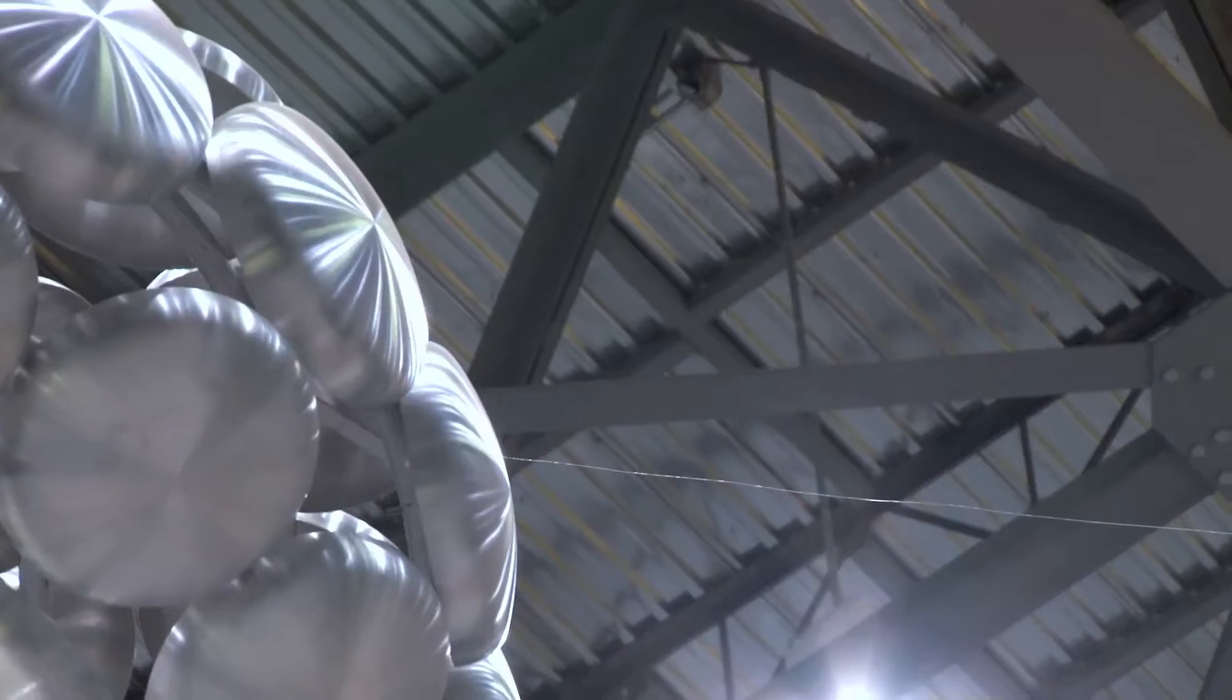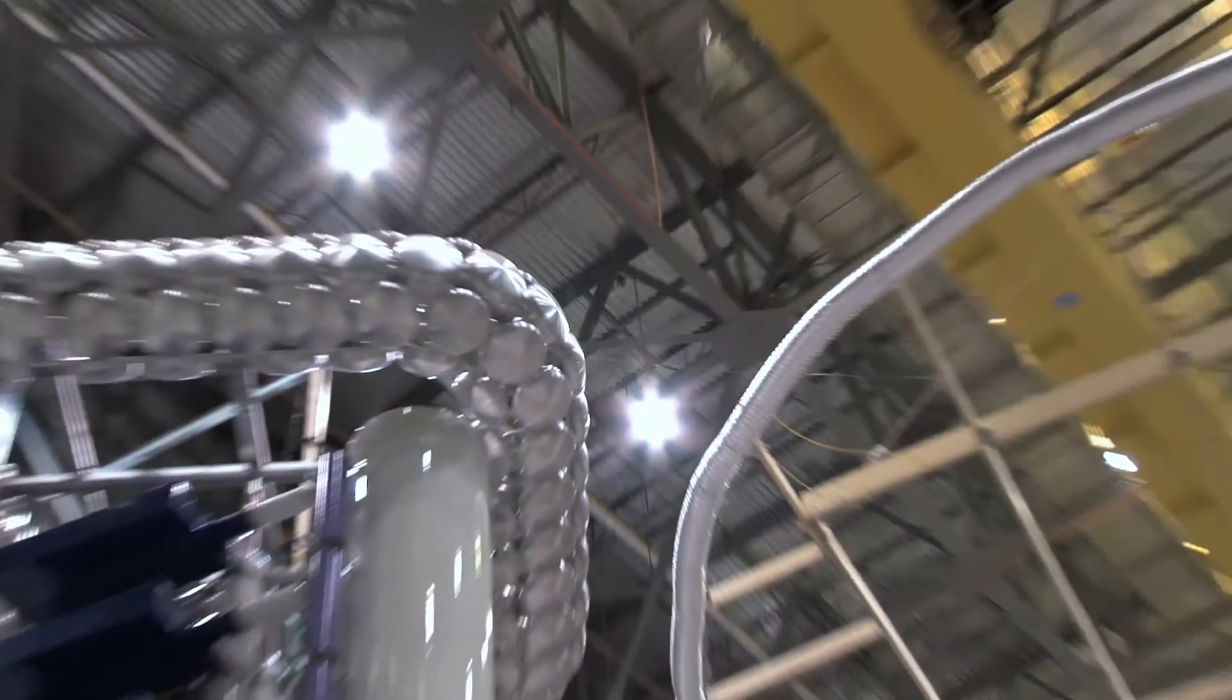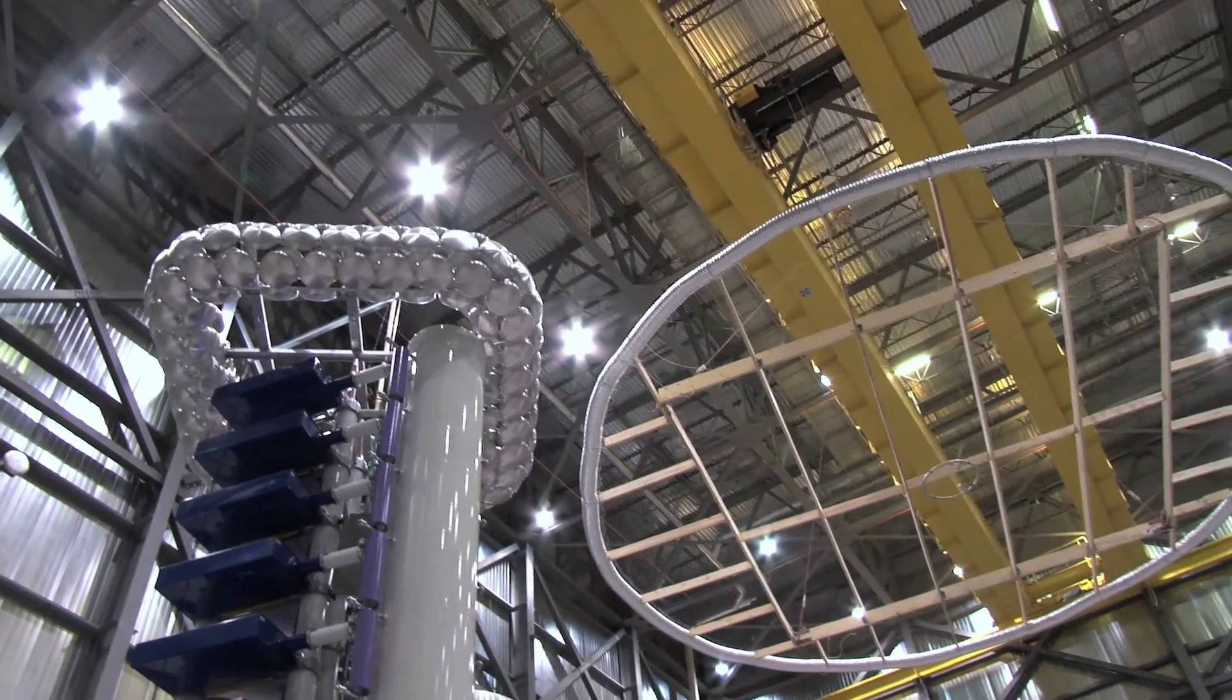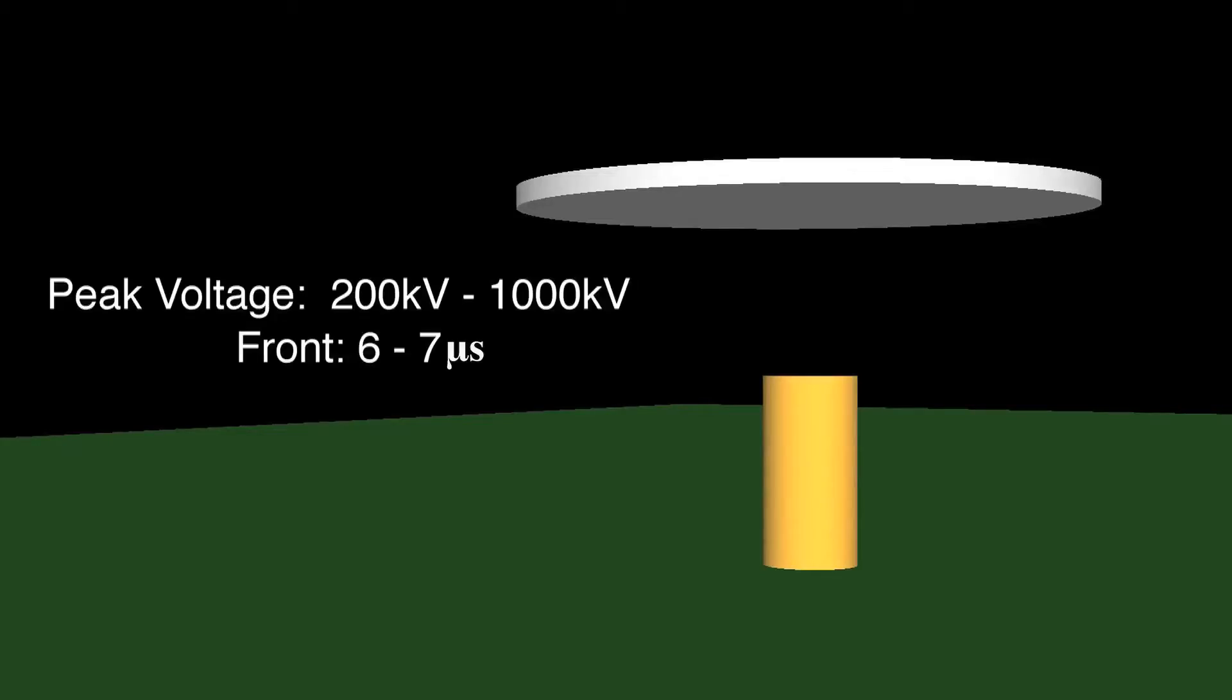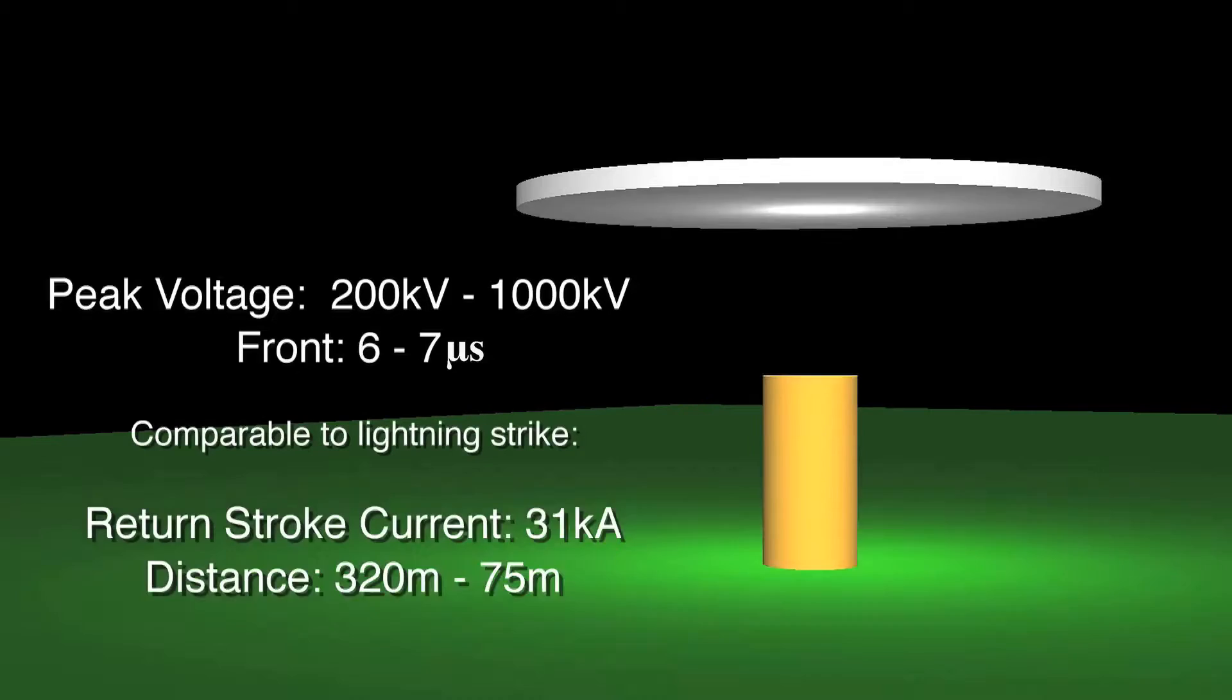An impulse generator is connected to the plane electrode and impulses whose peaks range from approximately 200 kilovolts to 1,000 kilovolts and with a front of between 6 to 7 microseconds are applied. It can be shown using Rusk that this would be comparable to the inducing potentials produced by a lightning strike whose return stroke current was 31 kiloamps and at a distance ranging from 320 to 75 meters.